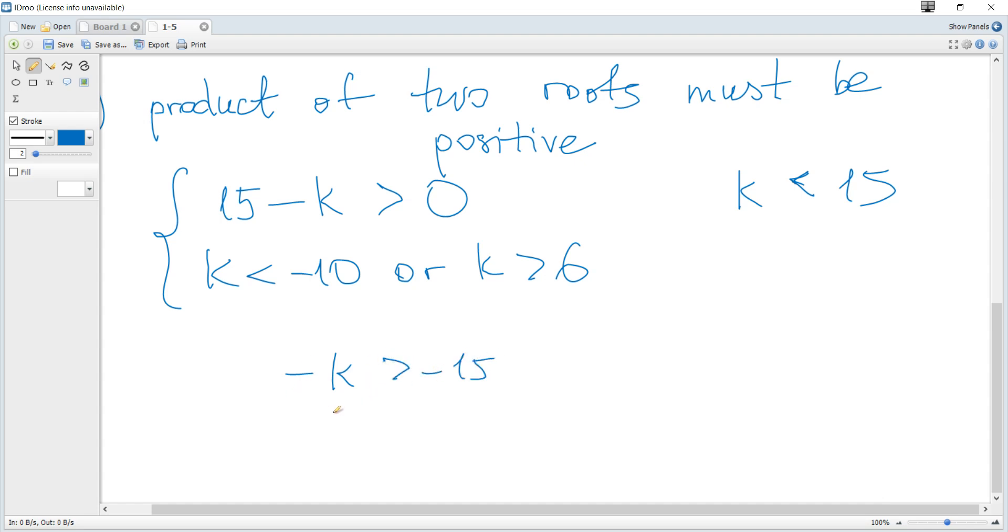But if you divide or multiply by a negative value, you should flip the inequality sign. So it becomes k < 15, together with k < -10 or k > 6. We need the intersection.